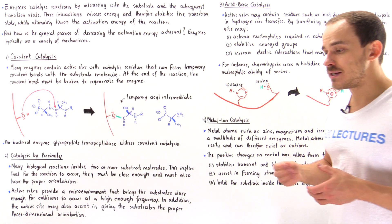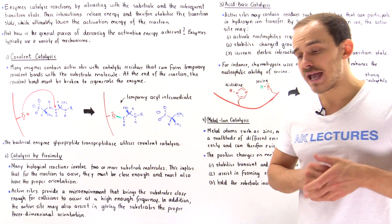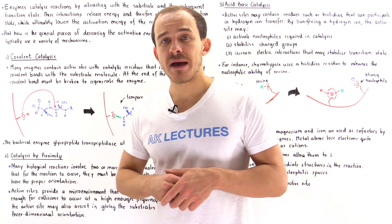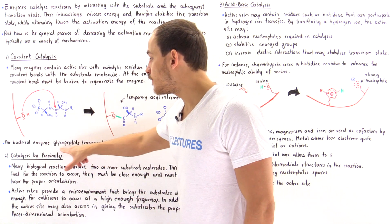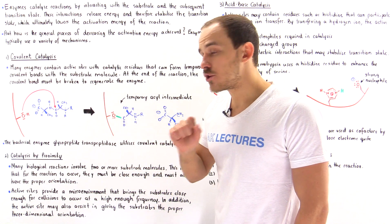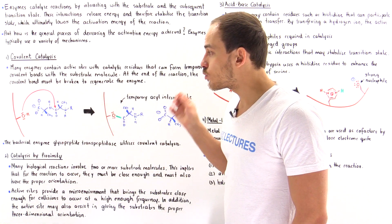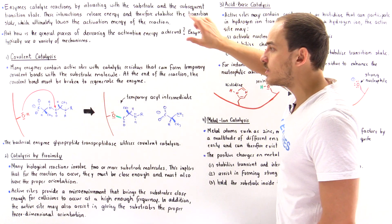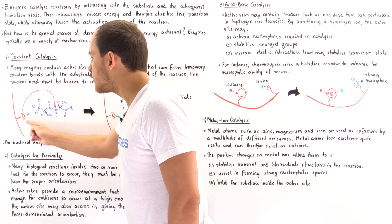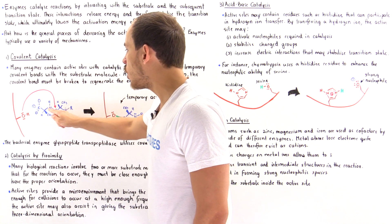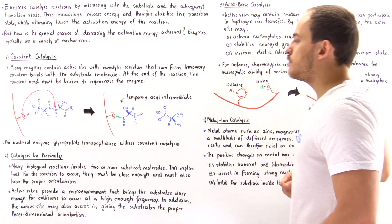In our discussion on irreversible suicide inhibitors, we discussed penicillin — an antibiotic that affects a specific bacterial enzyme known as glycopeptide transpeptidase. Inside the active site of glycopeptide transpeptidase is this catalytic residue, namely a serine molecule. The serine amino acid plays the catalytic role of actually forming a temporary covalent bond between the oxygen and a carbon. In the first step, this molecule forms a bond between the oxygen and the carbon, kicking off the terminal amino acid to form the temporary transient acyl intermediate molecule.